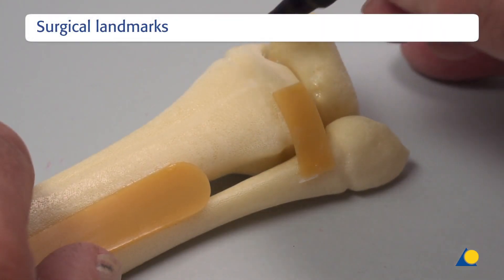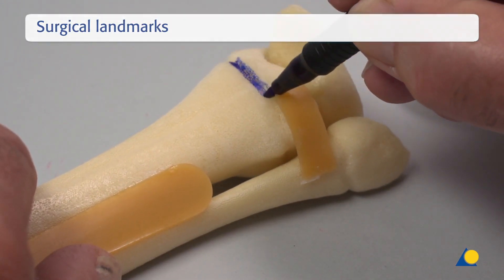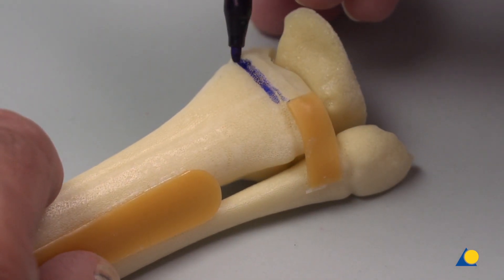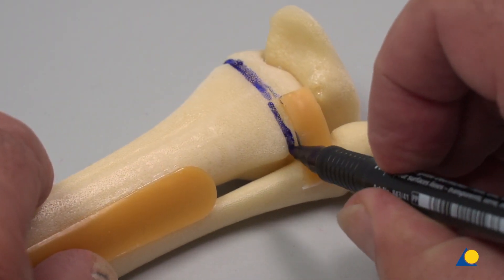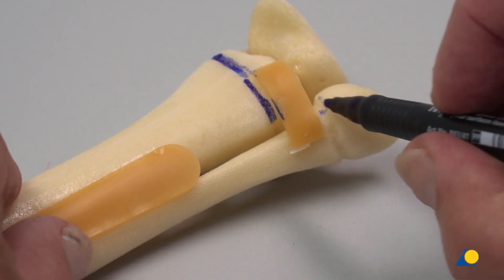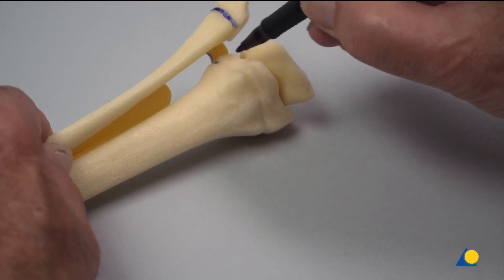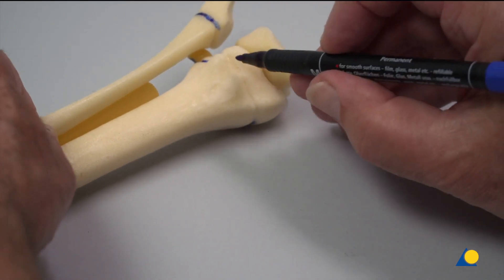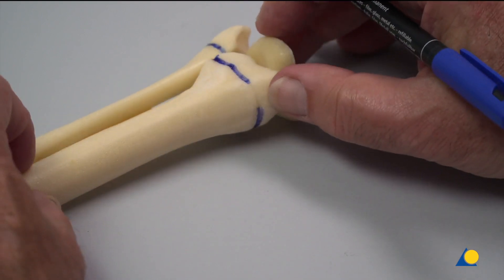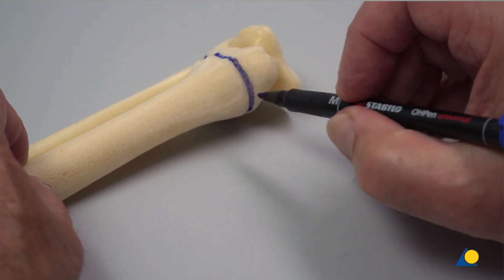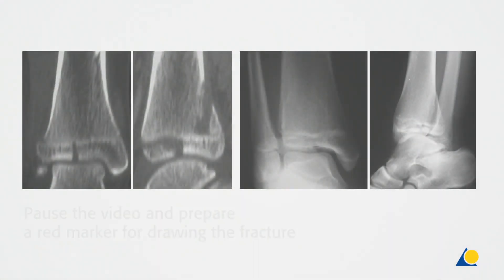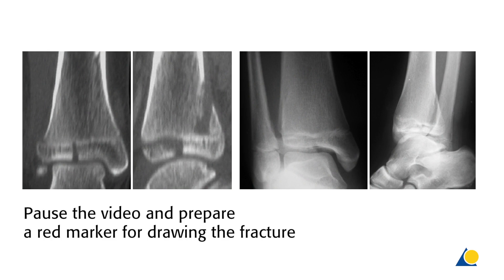A blue marker is used to mark the full circumference of the physis on the tibia and on the fibula. For the dorso-lateral part, the fibula is flipped anterior. At this point, we stop the video and you are requested to draw the fracture line with a red marker based on the x-ray and 2D CT scan on the screen. Before you cut the fracture, your table instructor should check your drawing first.